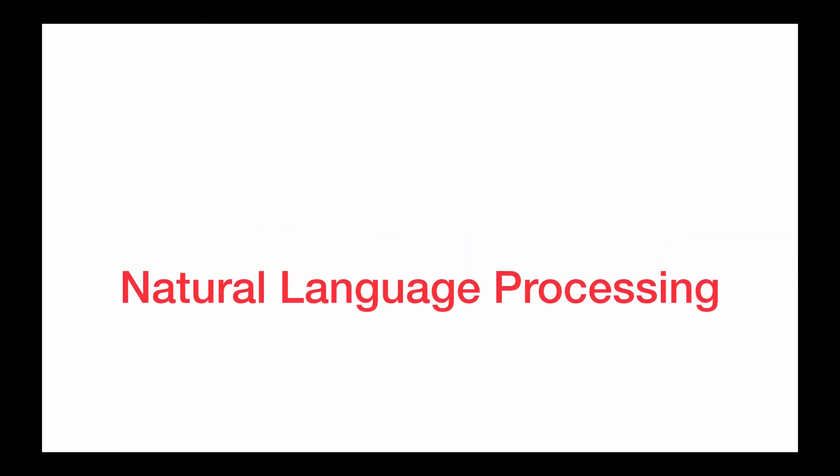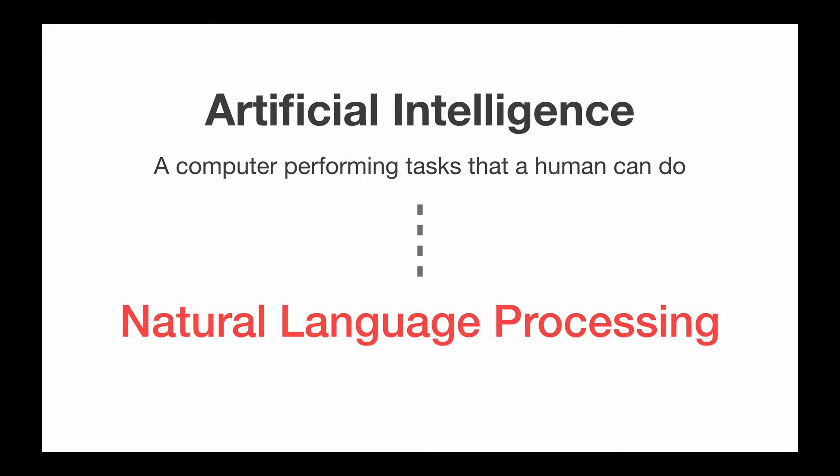And natural language processing falls under the greater umbrella of artificial intelligence, which is just a computer performing tasks that a human can do. So if you think about it, like you might have heard of computer vision, that's a computer trying to be a human's eyes and see objects. For natural language processing, it's a computer that's trying to interpret text just like a human would.